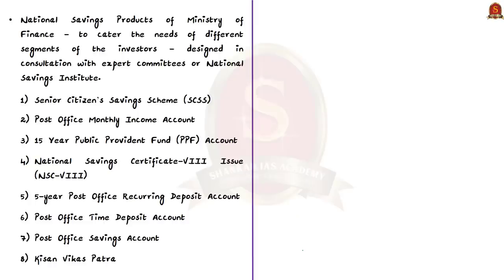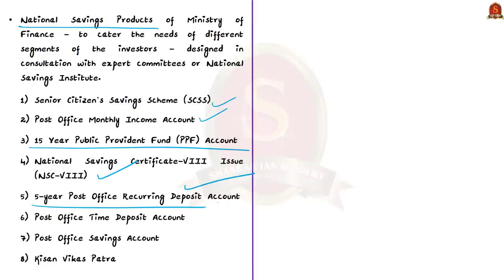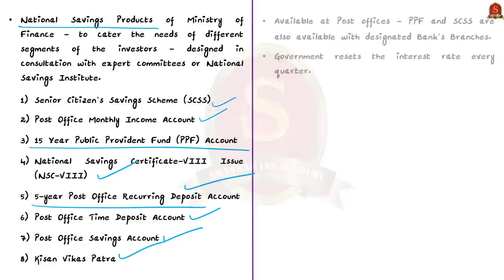There are many small savings schemes catering to different investor segments, also known as national savings products under the Ministry of Finance. The Ministry designs products in consultation with expert committees or the National Savings Institute, which works under the Department of Economic Affairs. Products include Senior Citizen Savings Scheme (SCSS), Post Office Monthly Income Account, 15-year PPF account, National Savings Certificate, 5-year Post Office Recurring Deposit, Post Office Time Deposit, Post Office Savings Account, and Kisan Vikas Patra. All are available at post offices; PPF and SCSS are also available at designated bank branches.